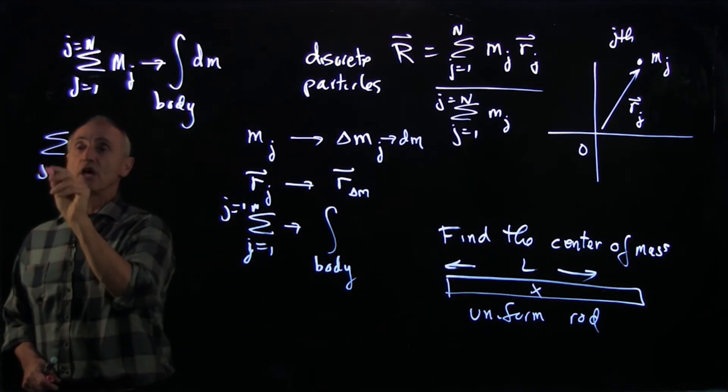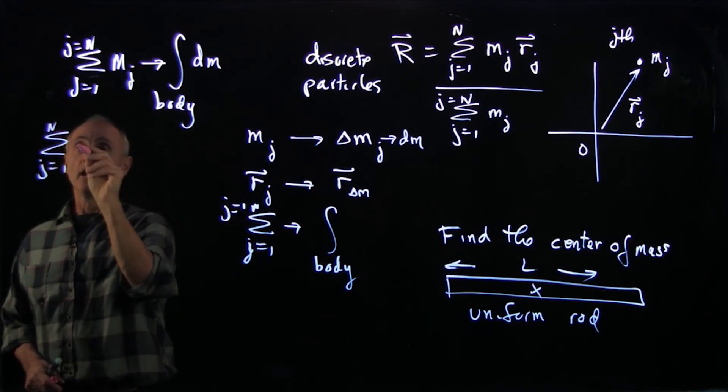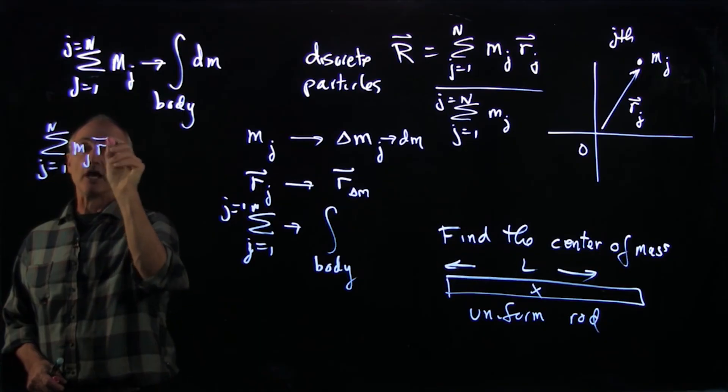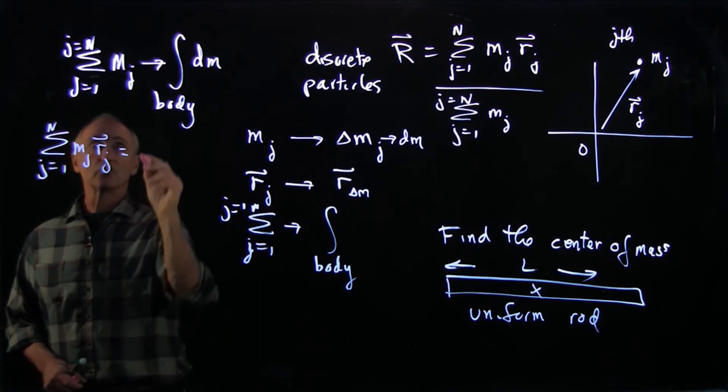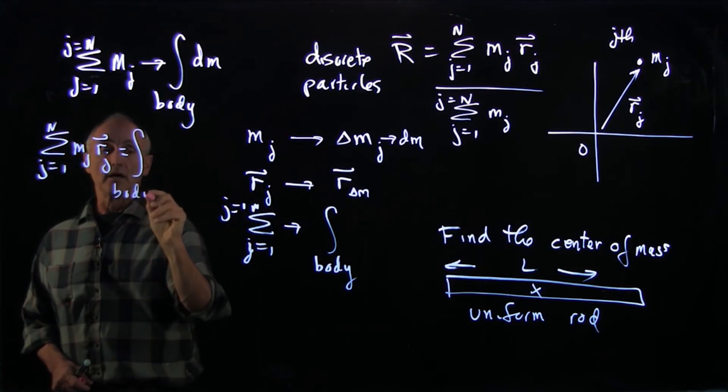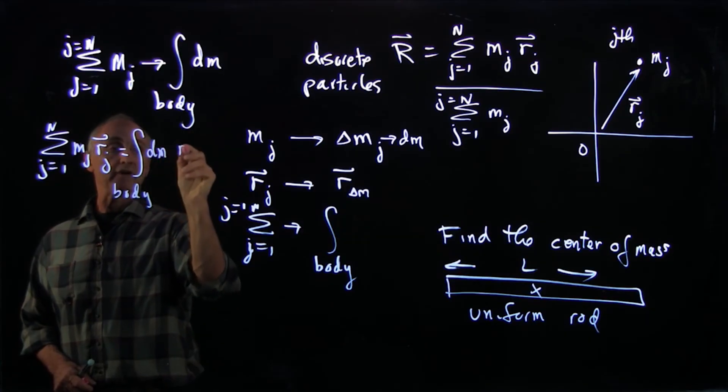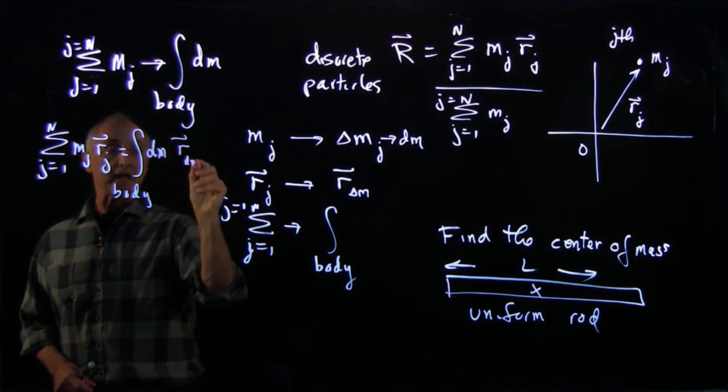Likewise, our sum j goes from 1 to n of mj rj goes to an integral over the body of dm vector r going to that element.